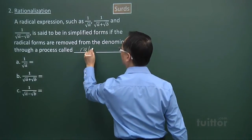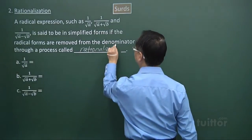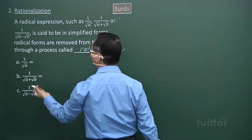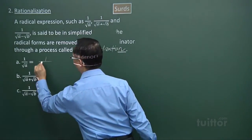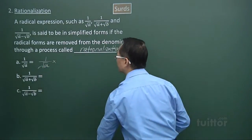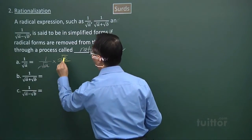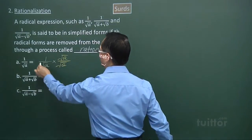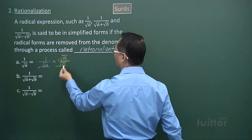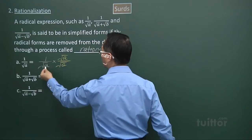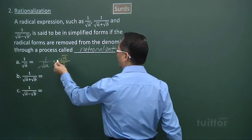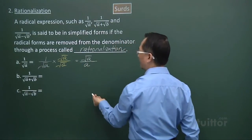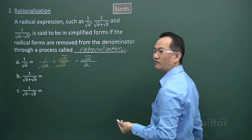To rationalize a radical expression, take 1 over square root a and multiply by square root a over square root a. This doesn't change the value since square root a over square root a equals 1. But 1 times square root a gives square root a over square root a times square root a, which is square root a over a. In the denominator, we no longer have a surd form.